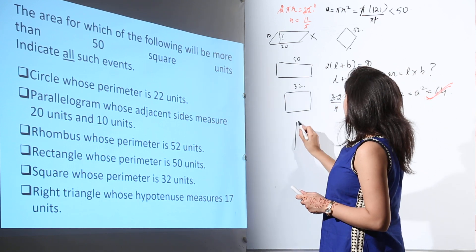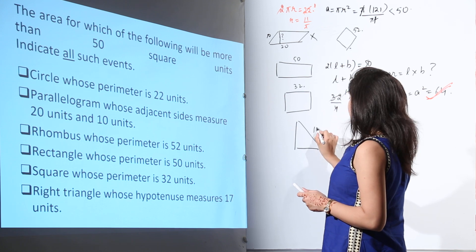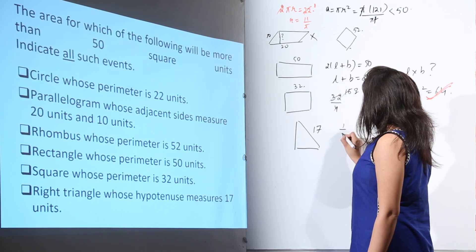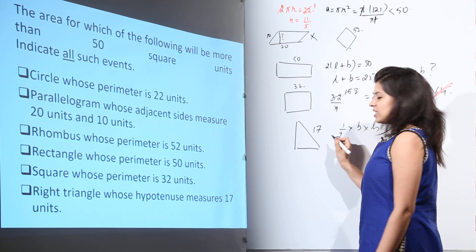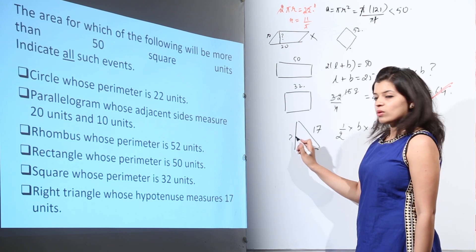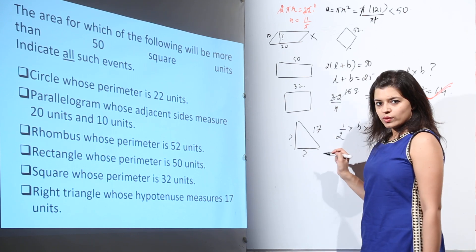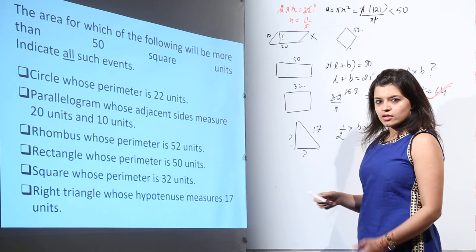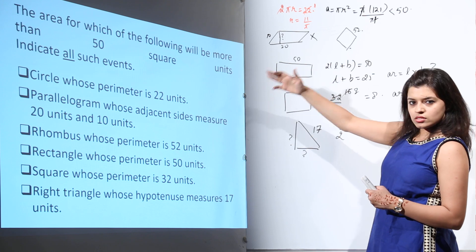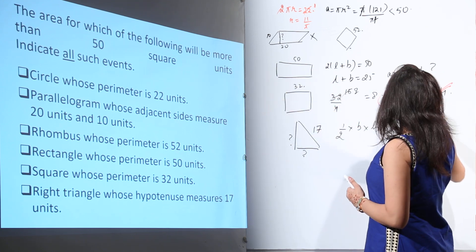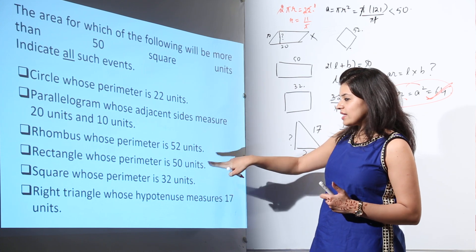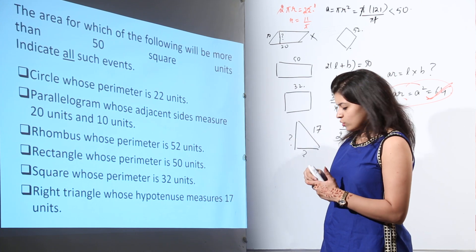Then we have a right-angle triangle whose hypotenuse measures 17 units. The area of a right-angle triangle is ½ × base × height. But in this case, we do not know the base and we do not know the height, so we cannot calculate the area. Out of all these options, the only one that answers this question is the square whose perimeter is 32 units — its area is more than 50 square units.